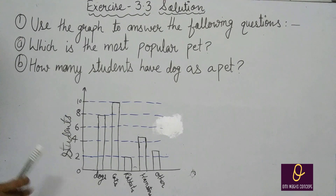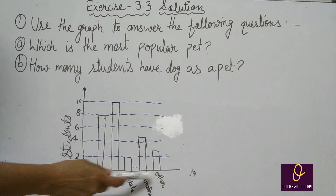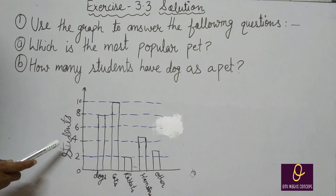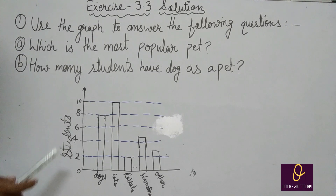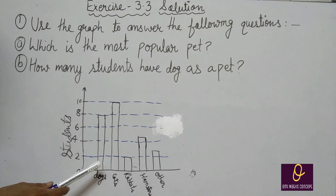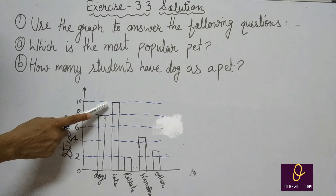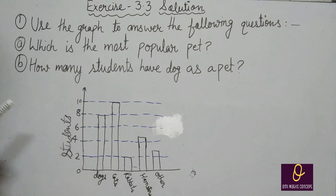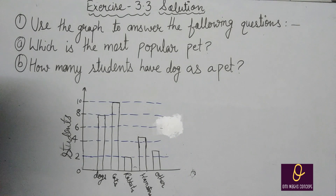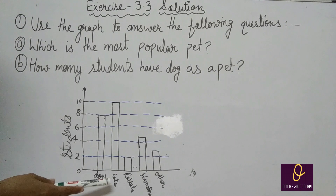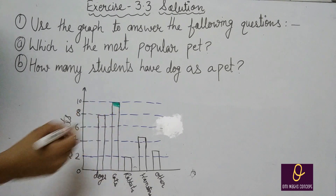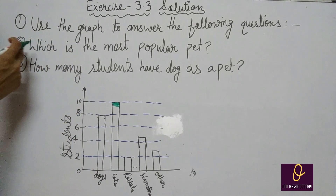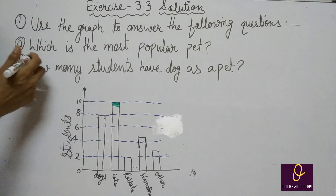अब देखिए जो यह graph है, इसके अंदर along x-axis pets given हैं और along y-axis we are using students. सबसे ज्यादा popular pet कौन से हैं? Means सबसे large graph वो कौन सा है? तो उसके अंदर cat है. Cat आपके पास 10 है. जिसमें सबसे बड़ा graph जाता है वो popular होता है. Answer: what is the most popular pet? You will write answer: cat.